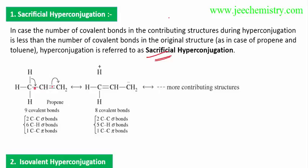The original structure has covalent bonds: bonds one, two, three, four, five, six — total six bonds — and then seven and eight bonds. This contributing structure has a different bond count. I'll draw this in a much more clear view.